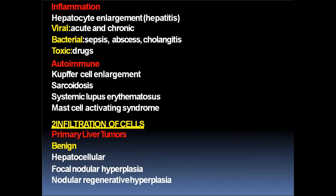Inflammatory causes: hepatocyte enlargement in case of hepatitis — viral causes both acute and chronic, bacterial causes including sepsis, abscess, and cholangitis. Toxic drugs, autoimmune conditions, Kupffer cell enlargement, sarcoidosis, systemic lupus erythematosus, and mast cell activation syndrome are all inflammatory causes of hepatomegaly.